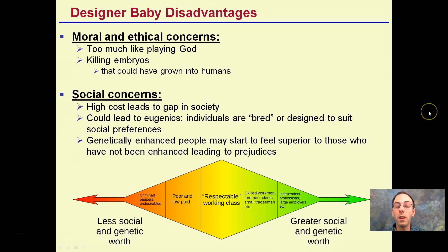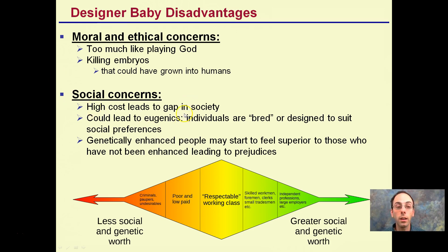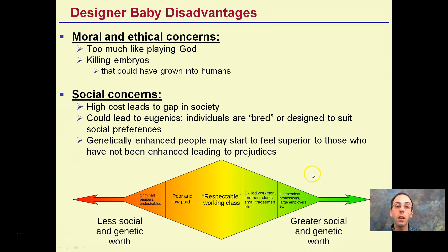Designer babies' disadvantages: Is it moral or ethical? Too much playing God. Embryos would be killed — selected against — and they could have developed into humans. There are social concerns: high cost leads to gaps in society, and it could lead to eugenics — the breeding of individuals designed to meet social preferences. Genetically enhanced people may start to feel superior to those who have not been genetically altered, creating divisions in social worth. There could be implications beyond just sequences of DNA.